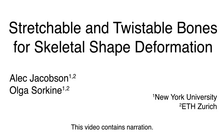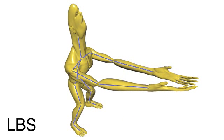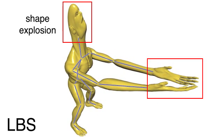Linear blend skinning for skeletal deformation is simple and fast. However, it does not properly handle stretching, where bones change length, or twisting, where the shape rotates along the length of the bone. Twisting is packed near joints and suffers from the candy wrapper effect. Stretching causes shape explosion.